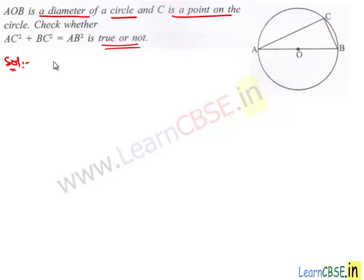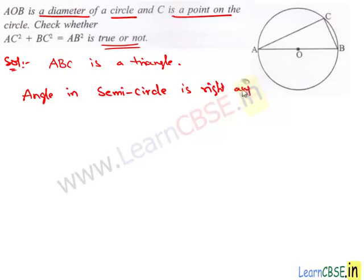And here we have ABC is a triangle. And here AB is the diameter. So we know that angle in semicircle is right angle. Therefore, angle C is right angle, we say that triangle ABC is a right angle triangle.